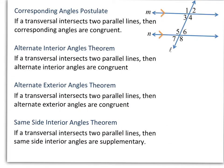Now a few postulates and theorems to go with our types of angles. The Corresponding Angles Postulate says if a transversal intersects two parallel lines, then corresponding angles are congruent. So those pairs of corresponding angles we named would be congruent to one another — angle 1 would be congruent to angle 5, angle 3 would be congruent to angle 7, and so on.